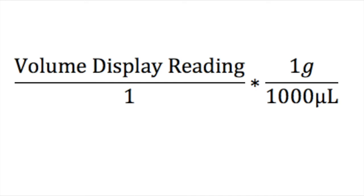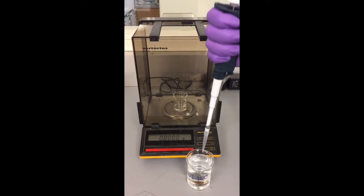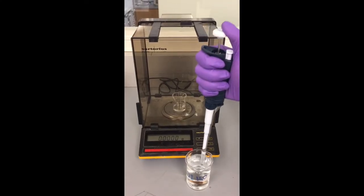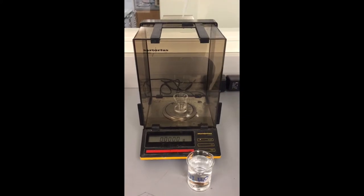Set your micropipet to the highest volume and calculate the expected weight of water for that volume. Your actual weight will need to be within 5% of this number. To calibrate your micropipet, draw up some of the deionized water and add it to the empty beaker on the analytical balance.